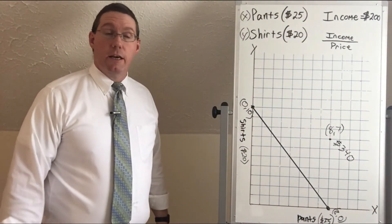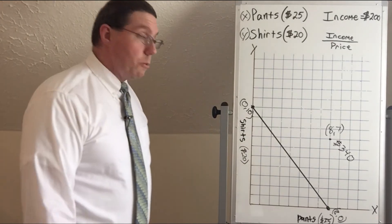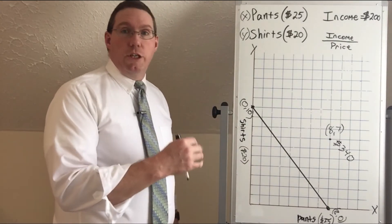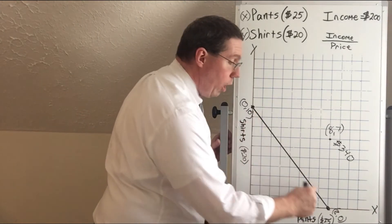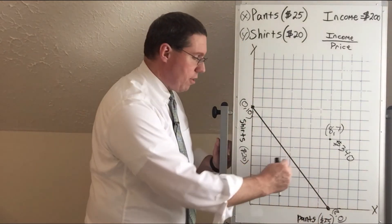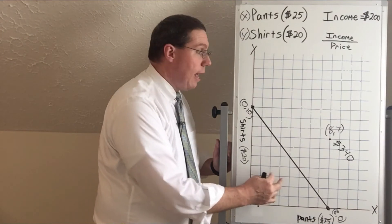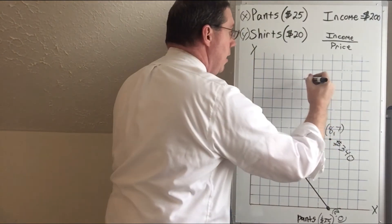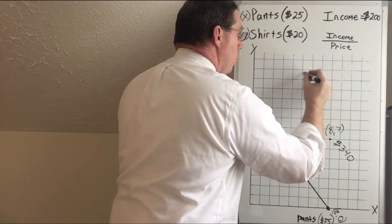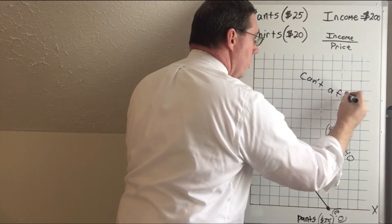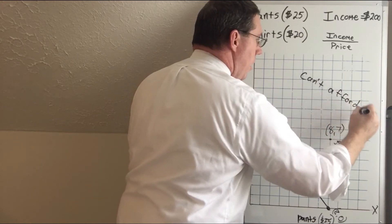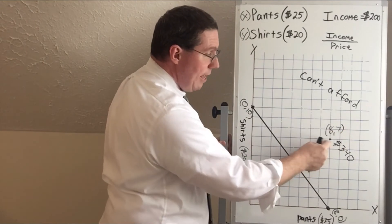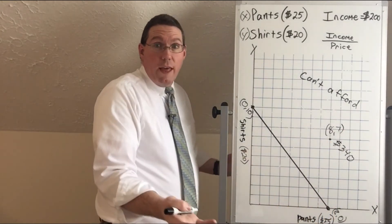The budget line tells us about three locations on the graph. There's on the line, inside the line, and outside the line. All points on the outside of the line represent combinations this household can't afford. We can see clearly that the point of eight pants and seven shirts is outside the budget — they can't afford it.